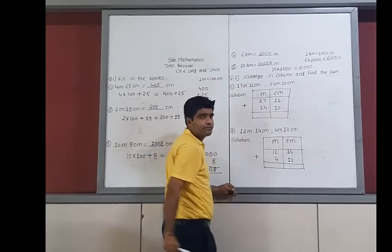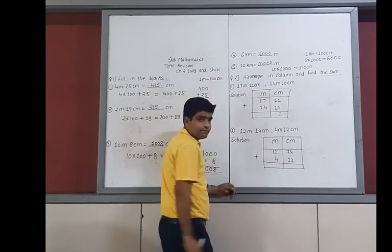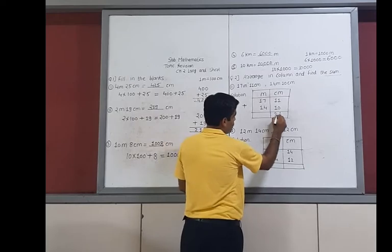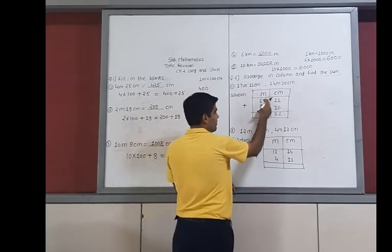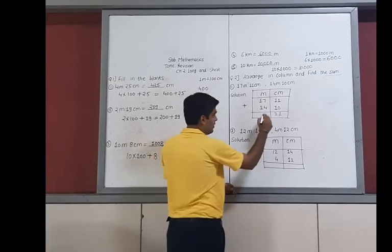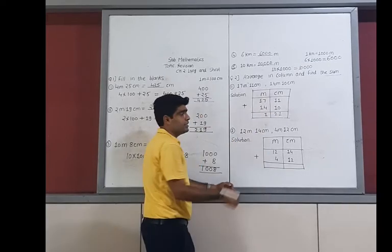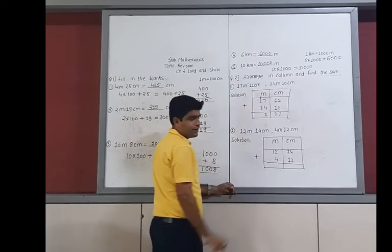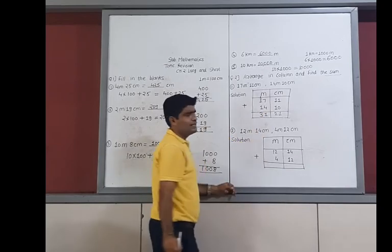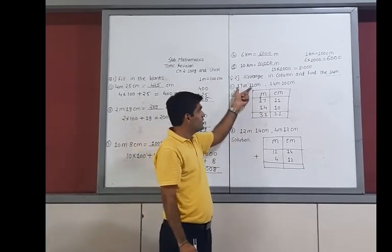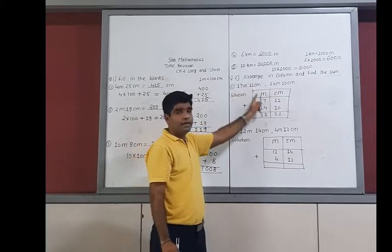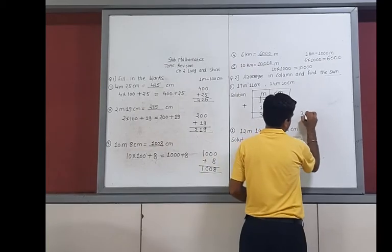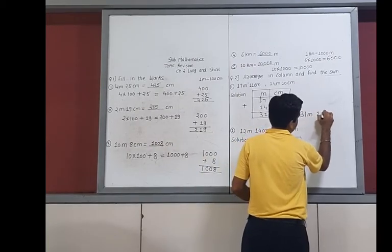On the centimeter side: 1 plus 0 is 1, and 1 plus 1 is 2, giving 21 centimeters. On the meter side: 7 plus 4 is 11, so we write 1 and carry 1; then 1 plus 1 plus 1 is 3. The sum of the two numbers is 31 meters 21 centimeters.